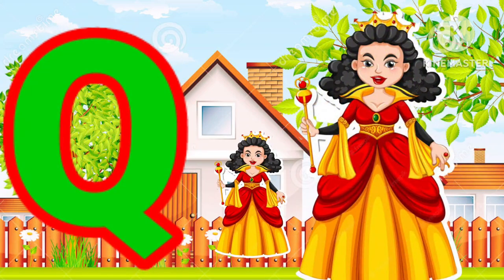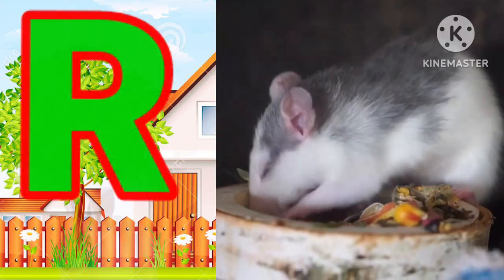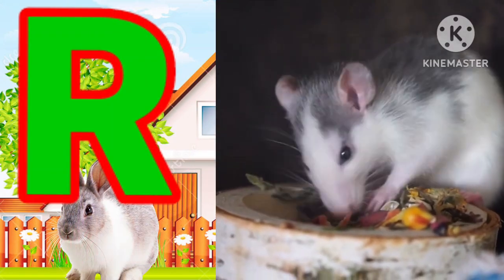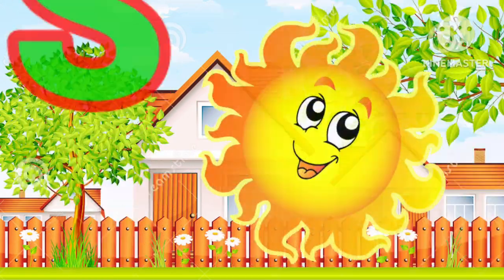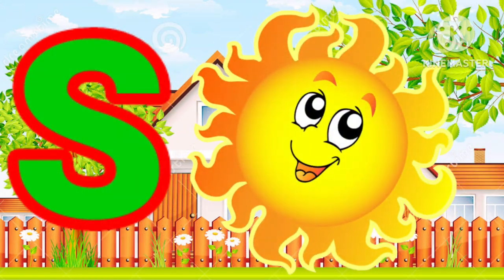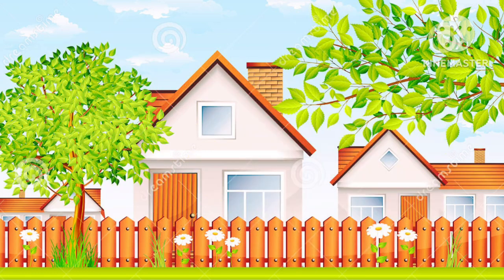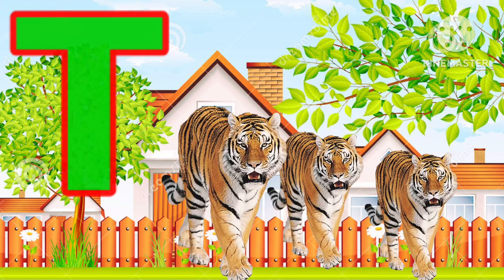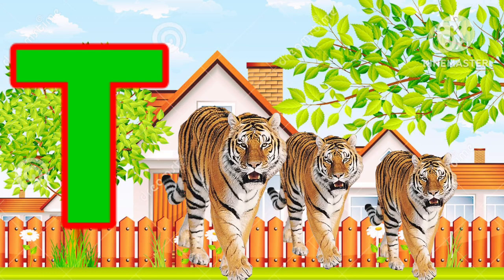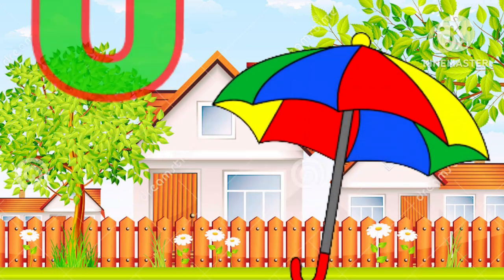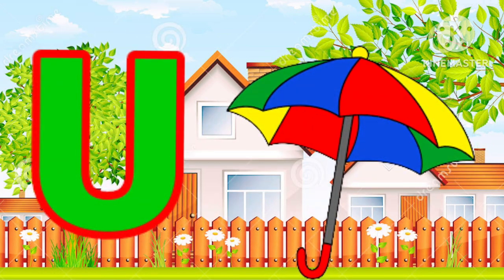Q for queen, R for rat, S for sun, T for tiger, U for umbrella.